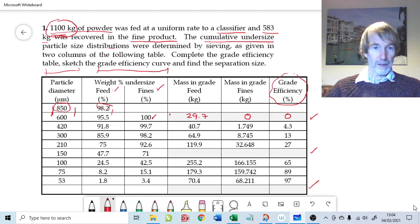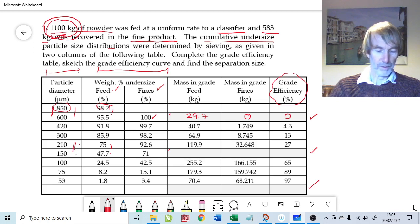Let's do a more complicated one. The gap between 210 microns and 150 microns. 75 percent of the 1100 kilograms passes 210 microns, 47.7 percent passes 150 microns. So the difference is 27.3 percent. So 0.273 times 1100 equals 300.3. Quite a lot. That's the most of it. 300.3 kilograms in that size range between 150 and 210 microns.